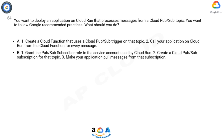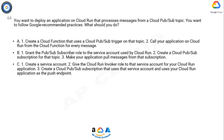Option B: 1) Grant the Pub/Sub Subscriber role to the service account used by Cloud Run. 2) Create a Cloud Pub/Sub subscription for that topic. 3) Make your application pull messages from that subscription.